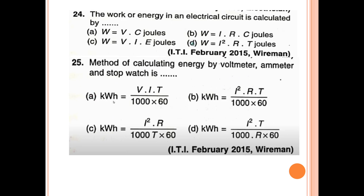24th question: The work or energy in an electric circuit is calculated by dash. The formula is Work equal to I squared R T joules.